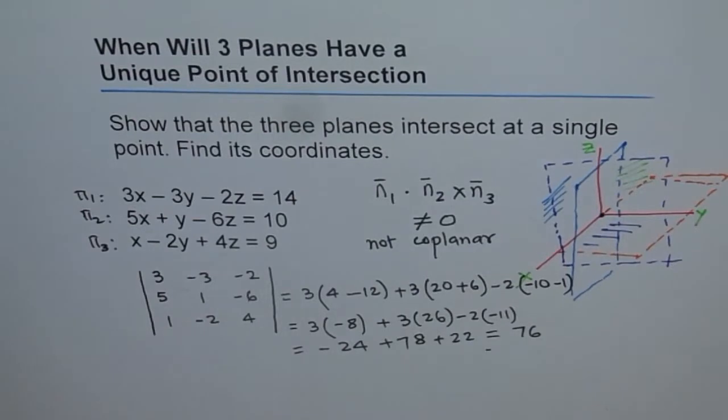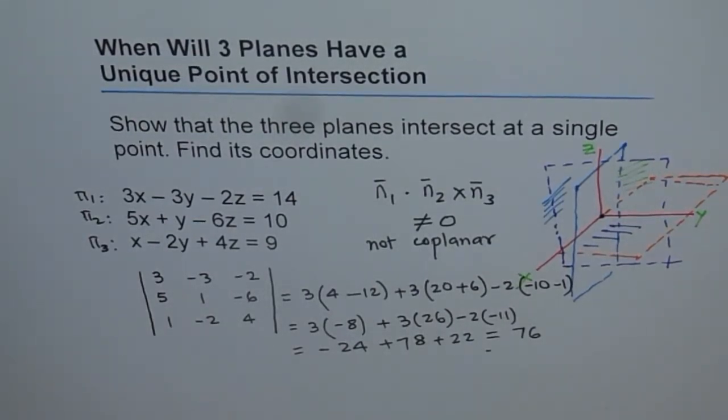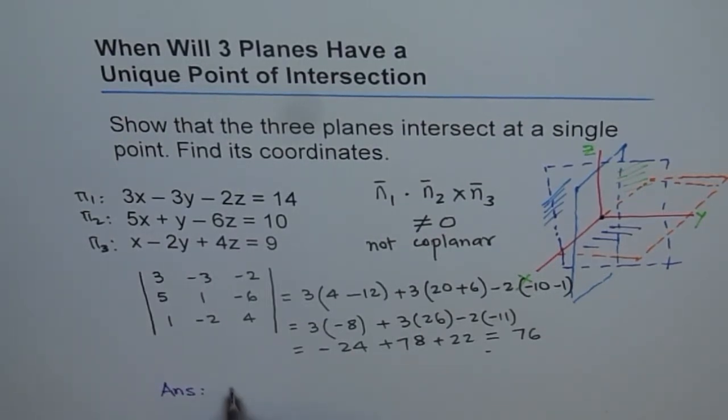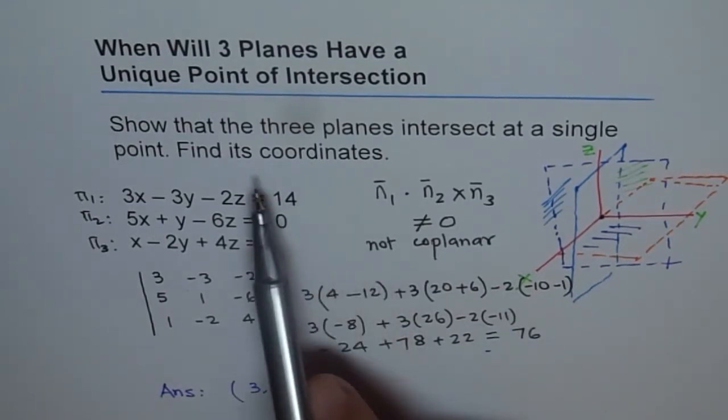Since it is not equal to 0, these 3 planes, the normal of these 3 planes are not coplanar. And that is why they will intersect at a point. I will not go and show you the solution for this, but let me tell you, write down the solution for you, the answer basically. So they do intersect, and the answer here is, the point at which they intersect is 3, minus 2, and half. So that is the point at which they intersect, and let that be an exercise for you.